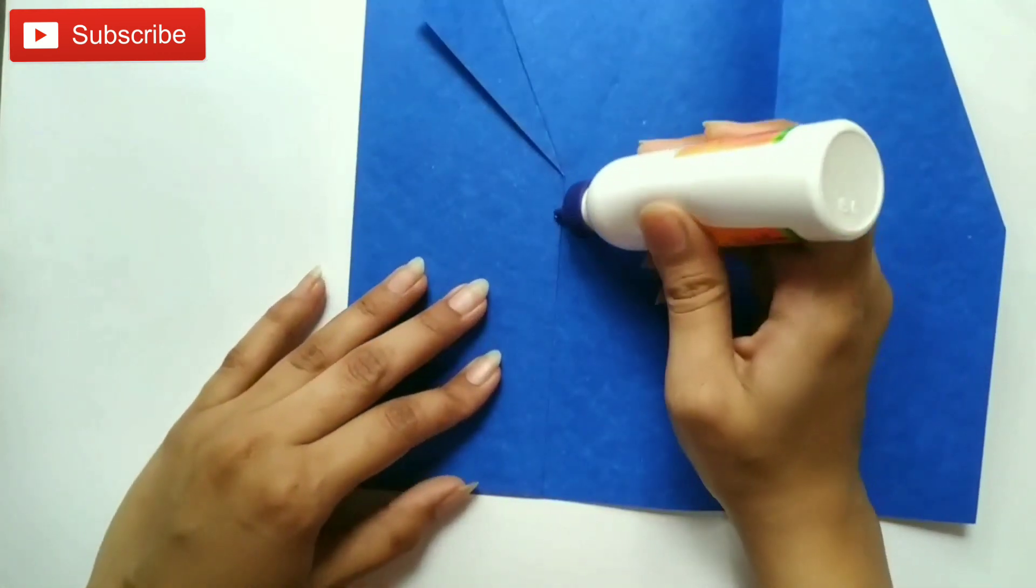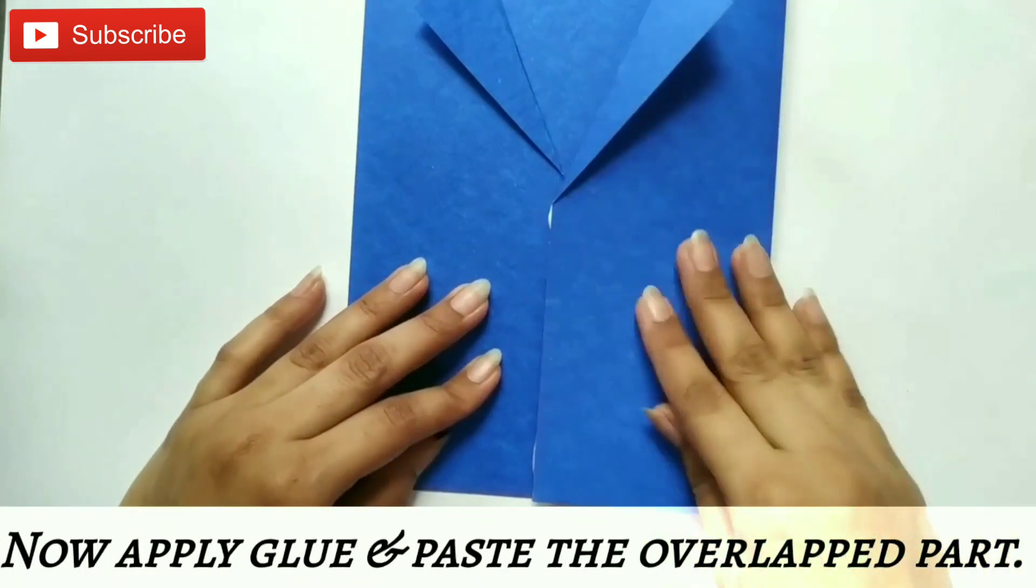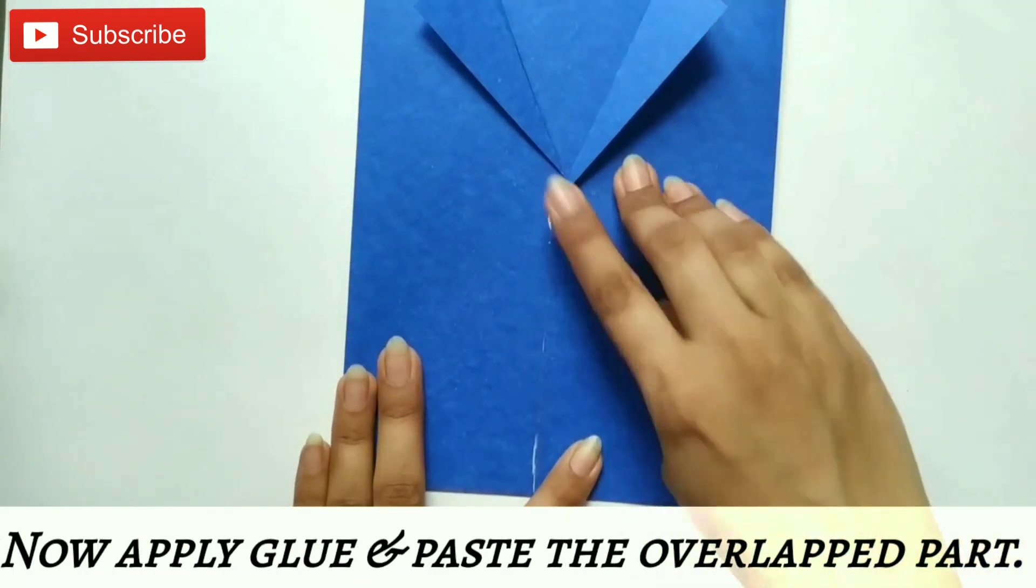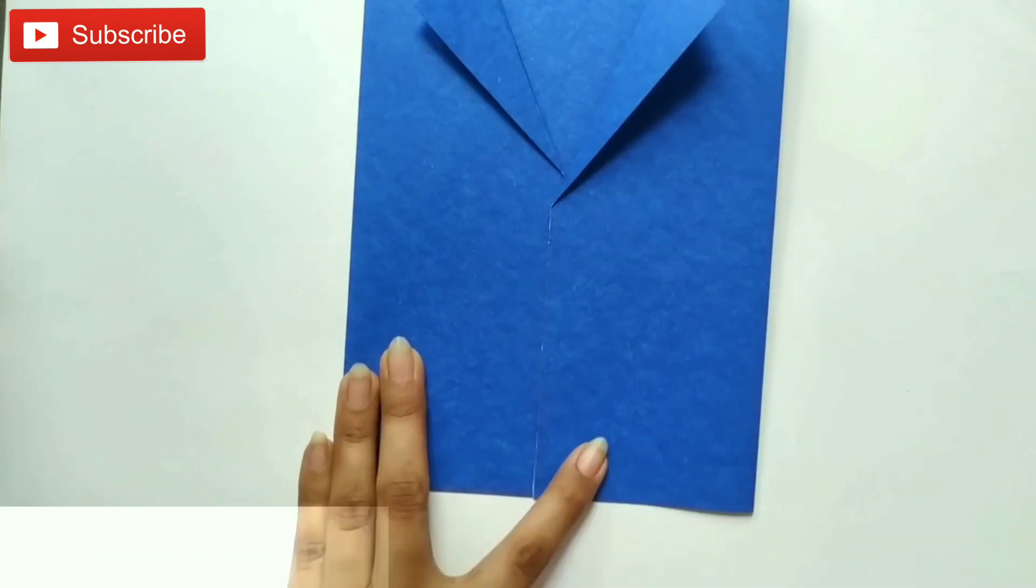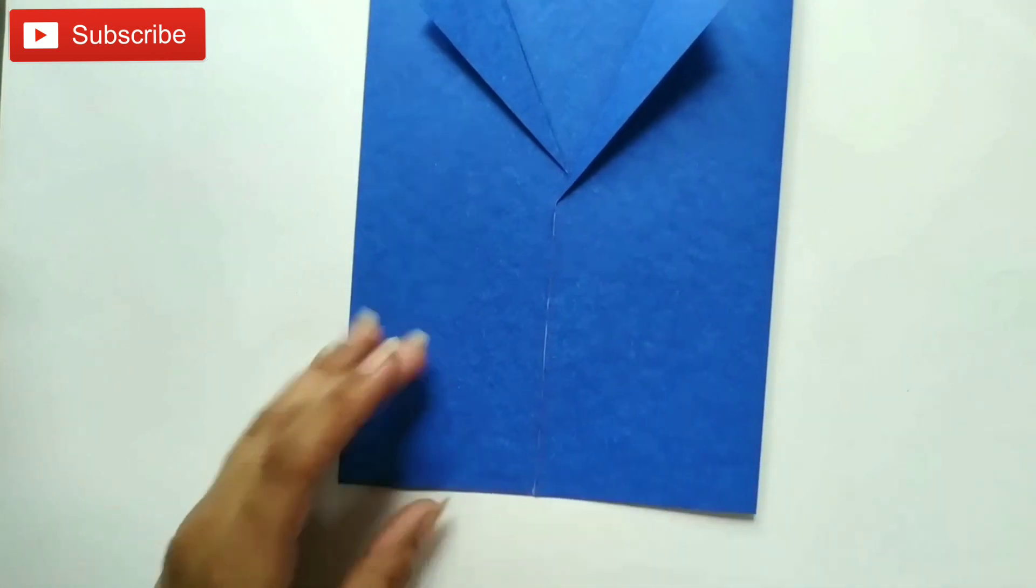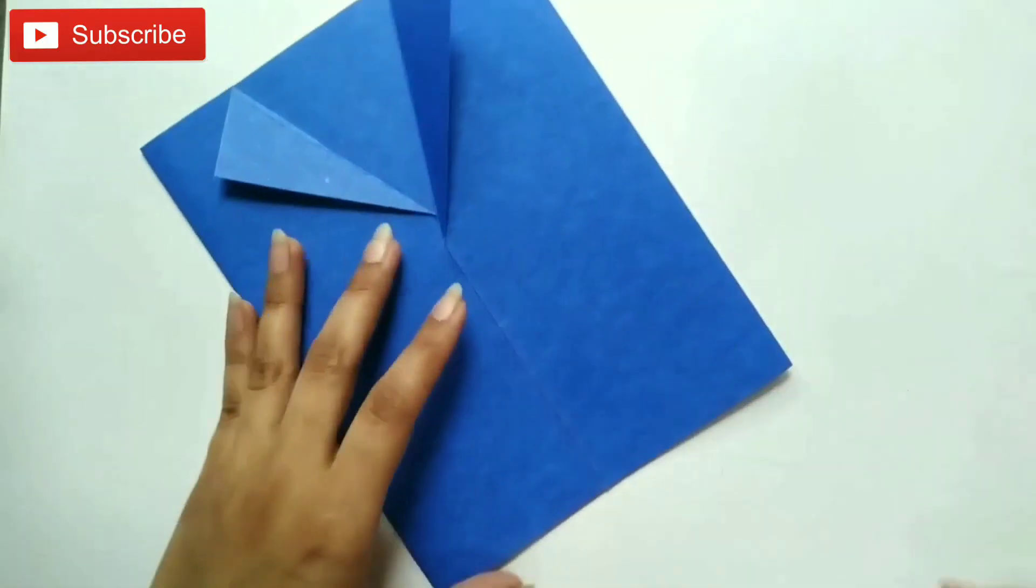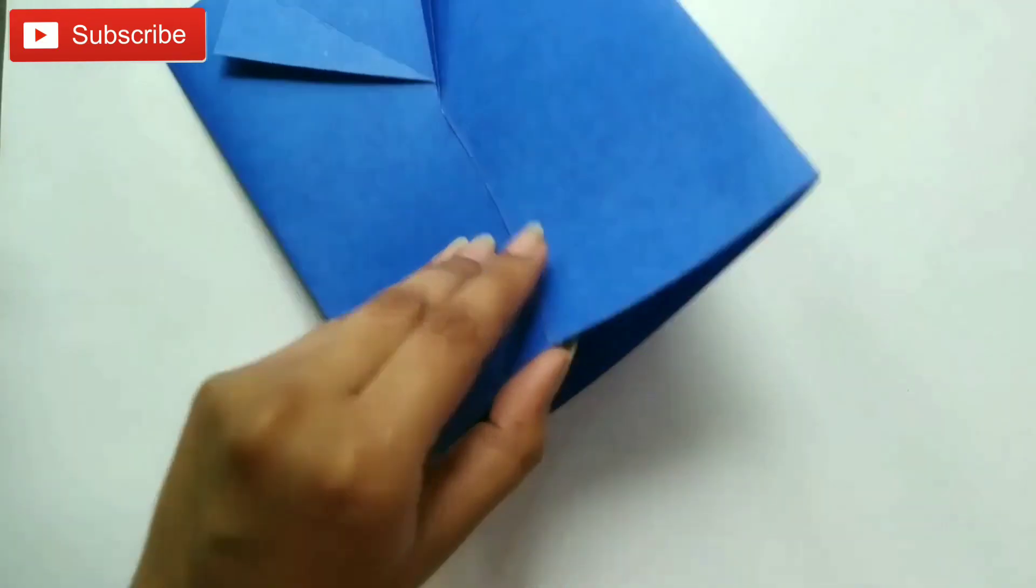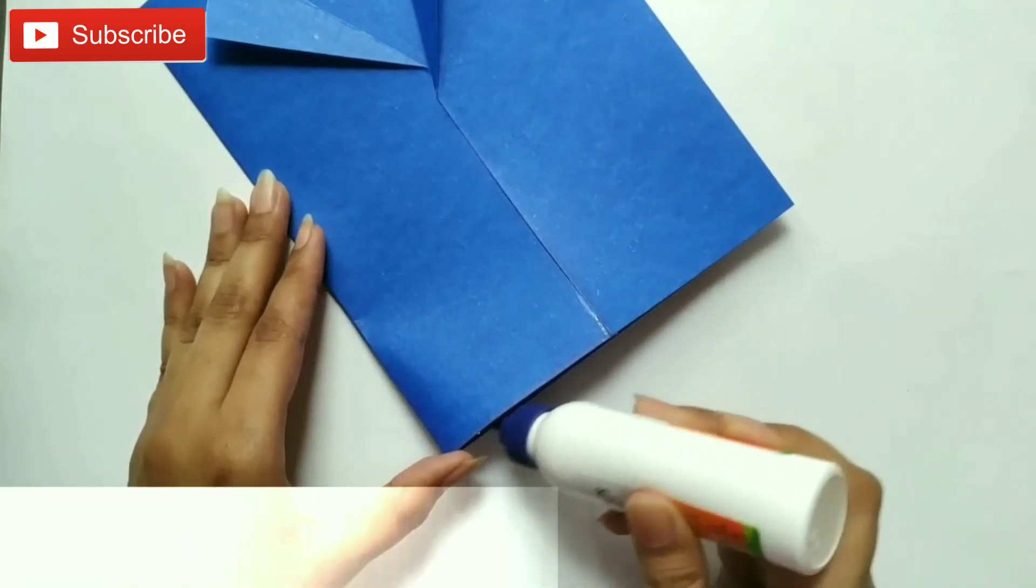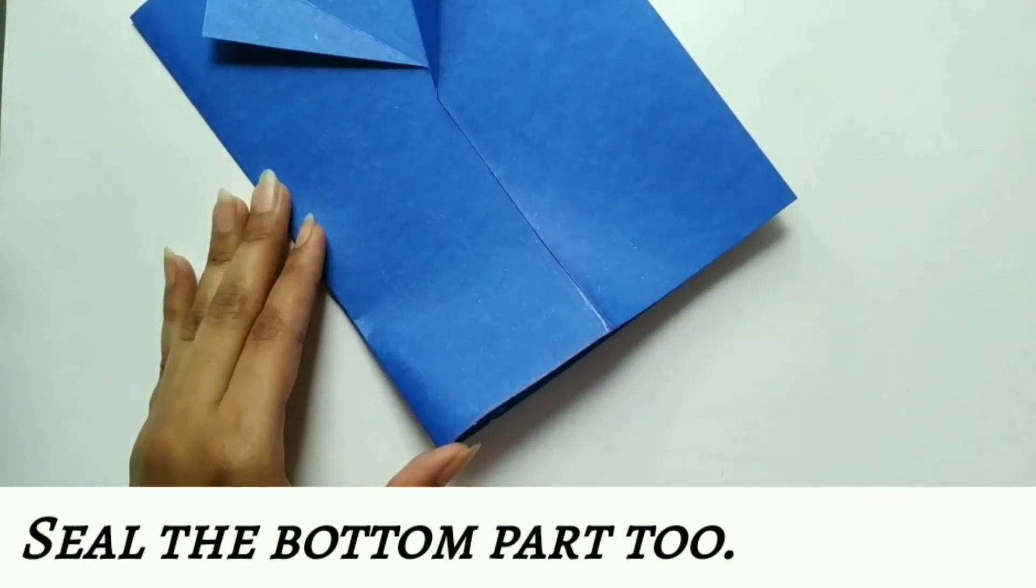Now, apply glue and paste the overlap part. Also, apply some glue at the bottom to seal the bottom part too.